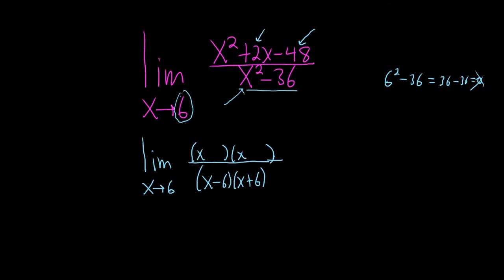Well, 6 times 8 is 48. So we'll put a 6 here and an 8 here. And they have to multiply to a negative 48, so one of them has to be negative. But they have to add to a positive 2. So I think that the 8 has to be positive, and the 6 has to be negative.